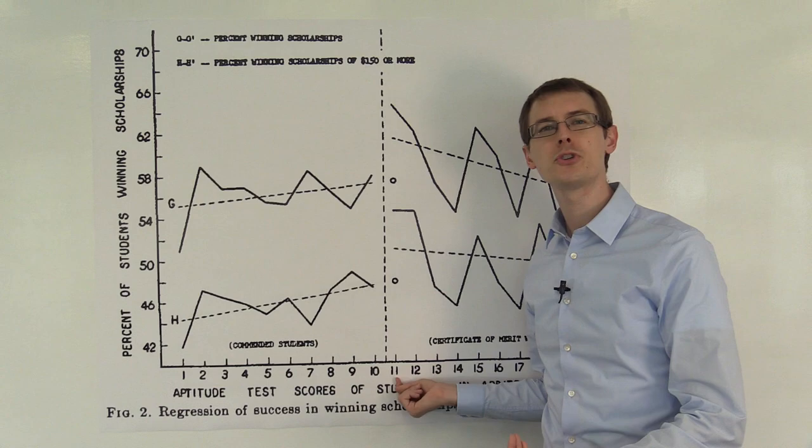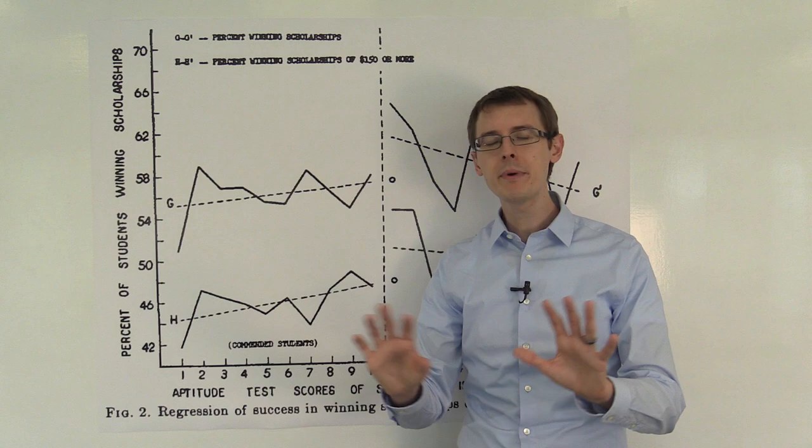And maybe the person who had gotten an 11 would have gotten a 10, just because of something completely random. Not because of any systematic difference between these two groups.